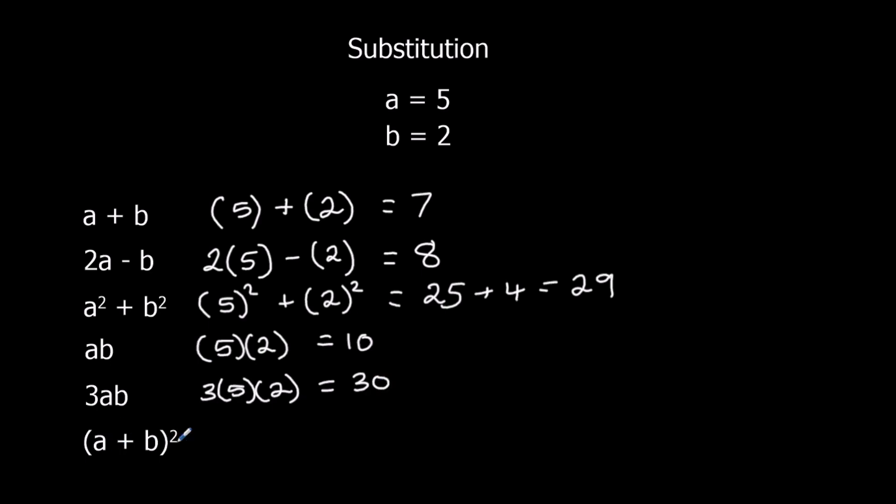And here I've got A plus B squared. We do the bracket first. So I've got 5 plus 2. We do that first, and then we square it. So 5 plus 2 is 7. So this is 7 squared. 7 times 7 is 49.